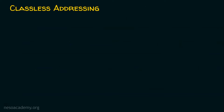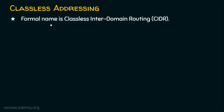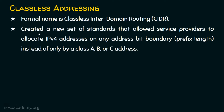The formal name for classless addressing is Classless Inter-Domain Routing — CIDR, pronounced 'cider.' CIDR created a new set of standards that allowed service providers to allocate IPv4 addresses on any address bit boundary — that is, the prefix length — instead of only by class A, B, or C.